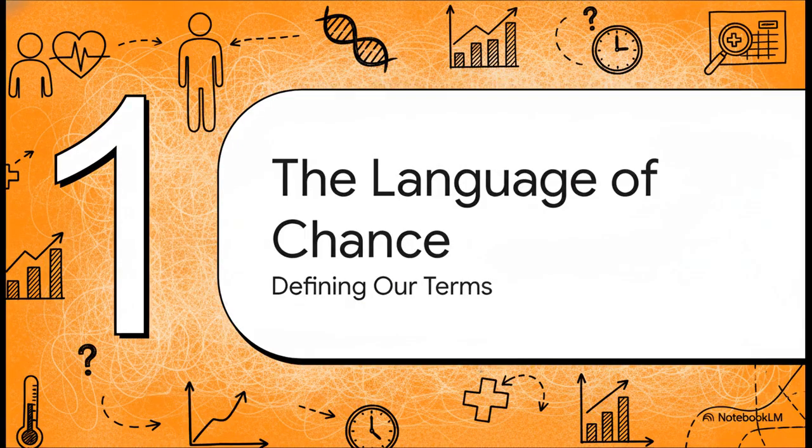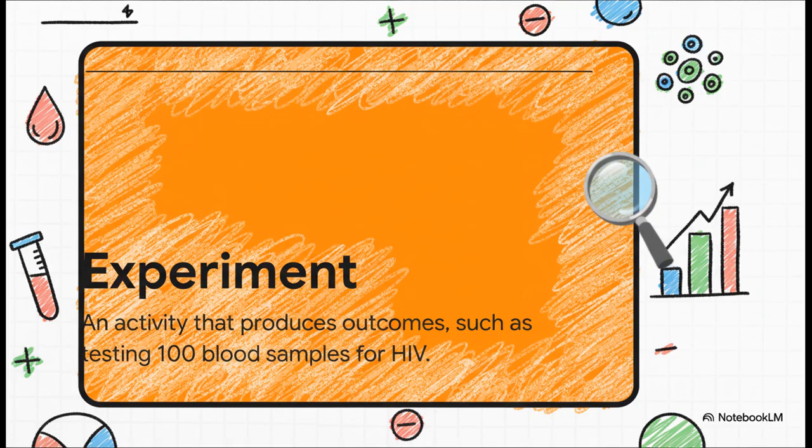Now, before we can crack that nut, we need to get on the same page. We need to speak the language of chance. So, we're going to quickly run through a few key ideas that will make everything else just click into place. First up is the word experiment. Now, in statistics, this doesn't mean you need a lab coat and safety goggles. An experiment is just any action that gives you a result. Testing a blood sample? That's an experiment. Taking someone's blood pressure? Yep, that's an experiment too.